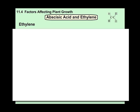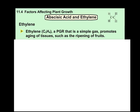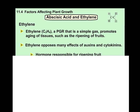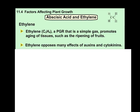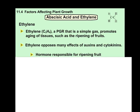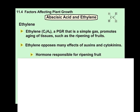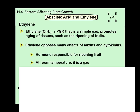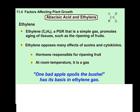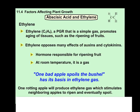The last PGR is ethylene — C2H4. It is a PGR that is a simple gas, and it promotes aging of tissues such as the ripening of fruits. Ethylene opposes many effects of auxin and cytokinins. The hormone ethylene is responsible for ripening fruit; at room temperature it is a gas. This is where the saying 'one bad apple spoils the bushel' comes from — one rotting apple produces ethylene gas, which stimulates neighboring apples to ripen and eventually spoil. It is a chain reaction, so be very careful with this process.